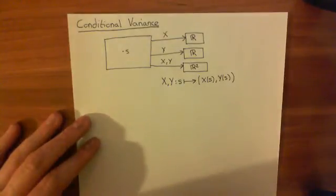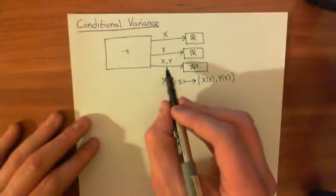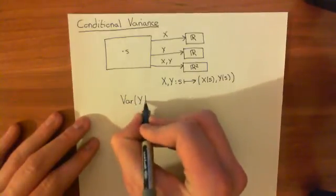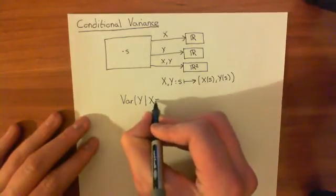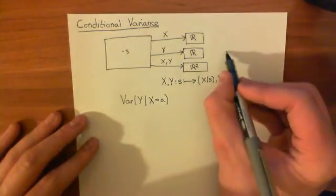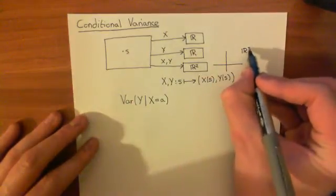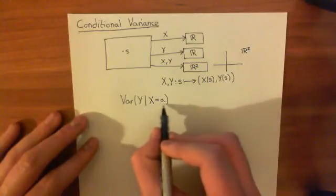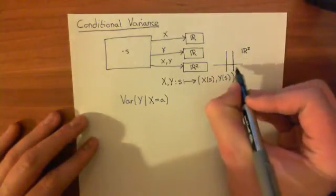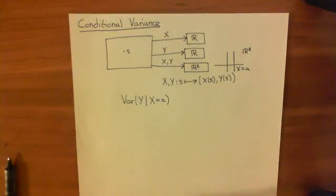What we can now consider is taking the variance of the random variable Y, where we condition on the value of X. We can condition on big X equaling some value little a. This joint random variable maps every outcome onto a point in R². We are now conditioning on the event that X is equal to a. If we draw a vertical line, that is the event that X equals a — all the points on that line constitute that event.